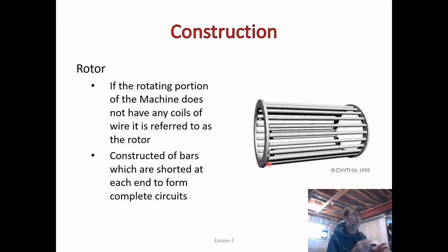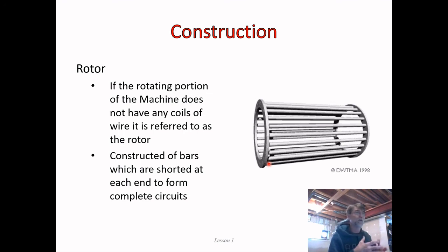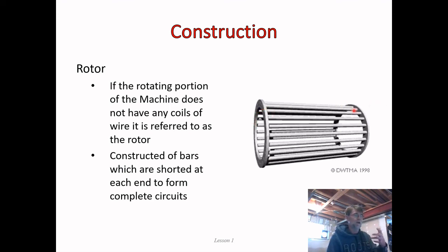This is important because an induced voltage only results in current when you have a complete circuit. The rotor has a whole collection of complete circuits to allow current to flow, and when current flows we get a magnetic field. Since a motor is about the interaction of two magnetic fields, shorting out these rotor bars and allowing current to flow through these short circuits means we get a very strong magnetic field, which is where the torque comes from.